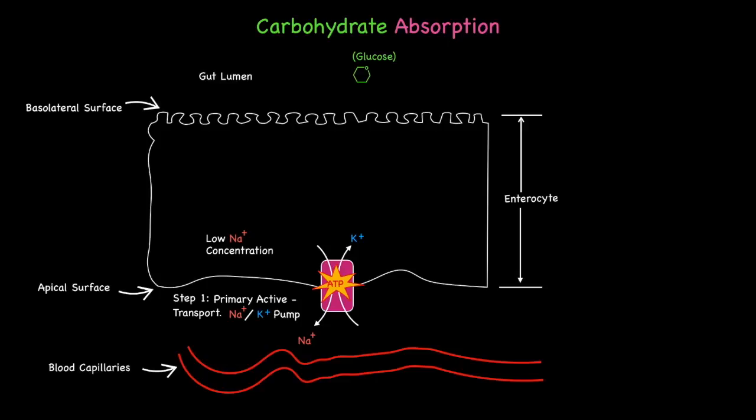This low intracellular sodium concentration triggers step two, and more specifically, a sodium-dependent glucose transporter located on the basolateral surface. Sodium moves along its diffusion gradient from the lumen of the GI tract and into the cytosol of the cell, bringing with it a glucose molecule. This type of transport protein is frequently referred to as a symporter, as it carries two entities together in the same direction.